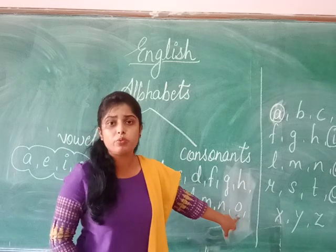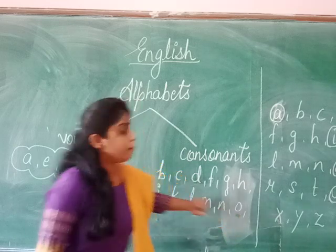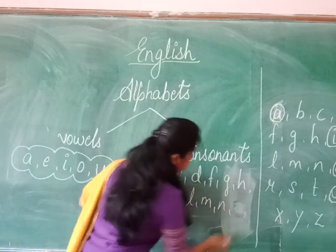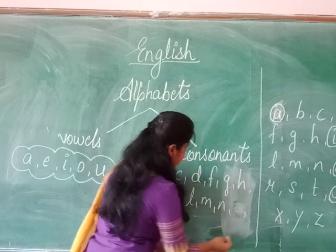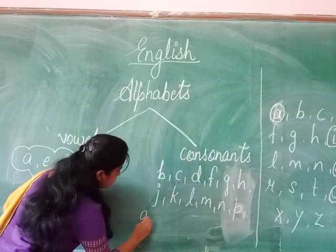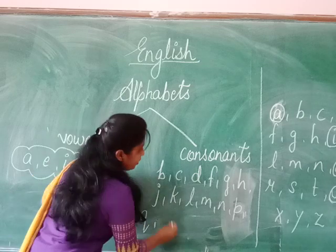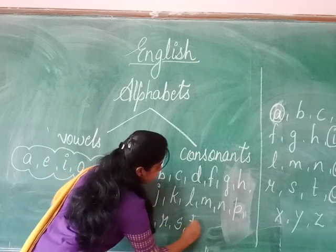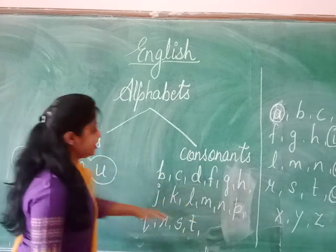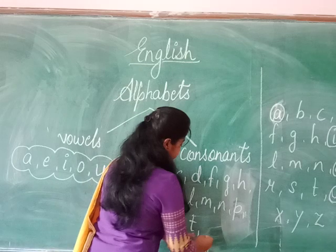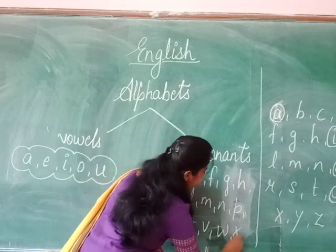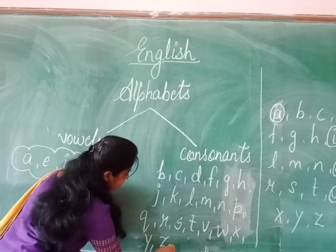O is a vowel, so O will not be counted as a consonant. After N, we write P, then Q, then R, S, T. U is a vowel so we skip it. Then V, W, X, Y, and Z.